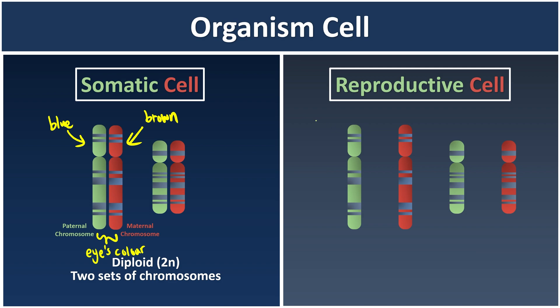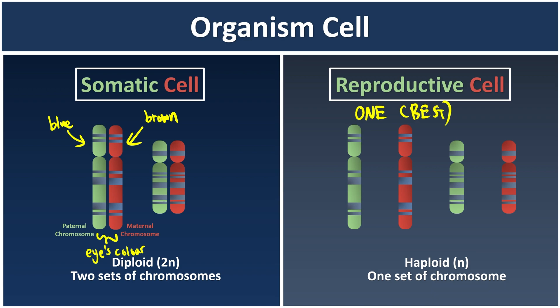On the other hand, for reproductive cells, we call it a haploid cell because it only consists of one set of chromosomes. This is very important when passing genetic information to the next generation — we only pass down a single set, giving the best one to our children. This is why reproductive cells only consist of one set of chromosomes, what we call haploid. You can think of the sperm cell and ovum as being very excited to fuse together — a happy haploid cell.